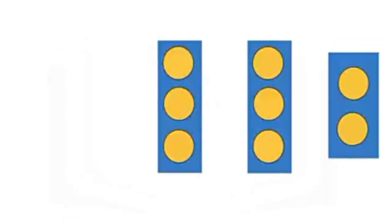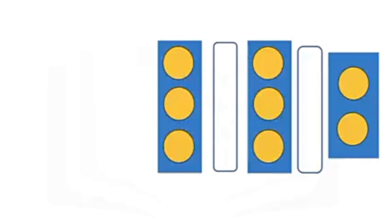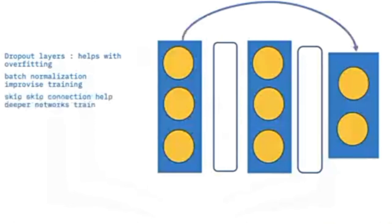Networks have layers that help with training. We will skip the details, but some methods like dropout prevent overfitting. Batch normalization helps with training. Skip connections allow you to train deeper networks by connecting deeper layers during training.